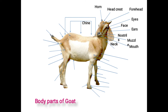Next is the neck portion. This is the second portion of the animal body, situated between the head and body. It includes the neck crust, which lies between the center of the pole to the hump, and this line is supported with heavy muscular growth.